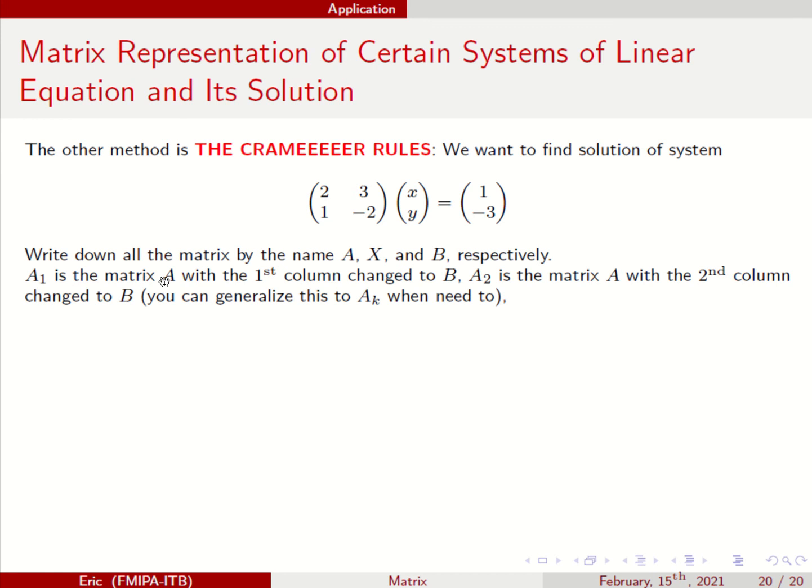So A1 is the matrix A, but the first column is changed with B. So you have 1 minus 3, 3 minus 2. That is A1. What about A2? A2 if you change the second column with the constant. So you have 2, 1, 1 minus 3. So that is A2. In general, you can have A_K if you have K times K matrices, but only if you have only one solution.